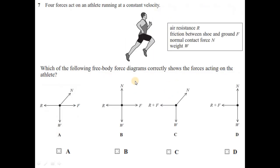Question seven: four forces act on an athlete running at constant velocity — which free body diagram correctly shows the forces acting on the athlete? Looking at the options, you can immediately ignore options A and C.